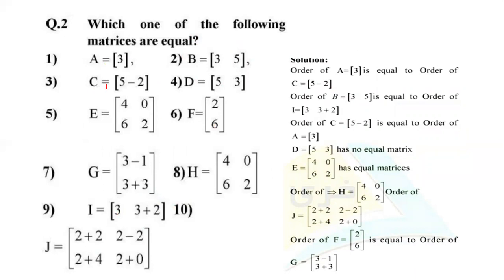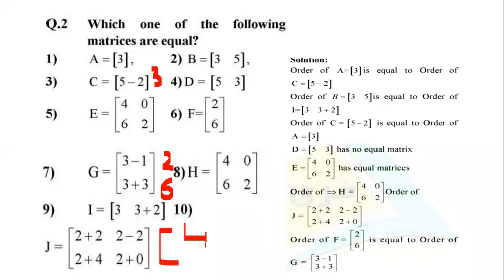In this case, for C, I have 5 minus 3, so the answer is 3. Then for the next matrix entries: minus 1 plus 3 gives 2, and 3 plus 3 gives values 1, 2, or 6. Then 2 plus 2 equals 4, and 2 minus 2 equals 0, and 2 plus 0 equals 2.